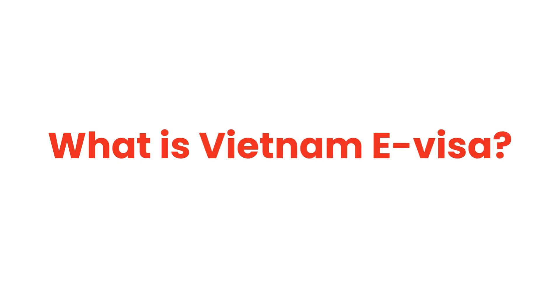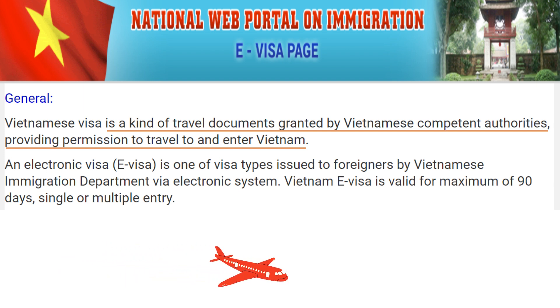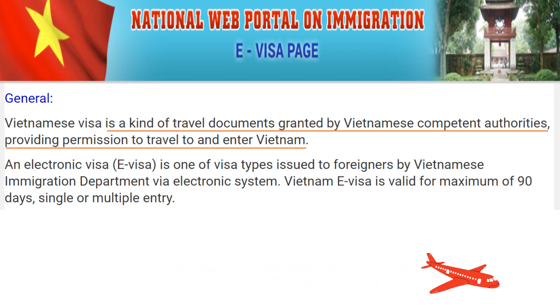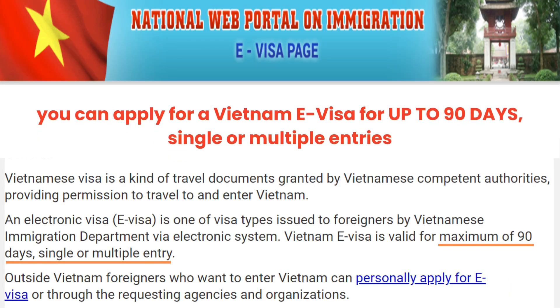Before getting started, what is Vietnam's e-visa? It's a travel document granted by the Vietnamese Department of Immigration now on your personal devices, providing permission to enter Vietnam. It's valid for a maximum of 90 days with a single or multiple entry.